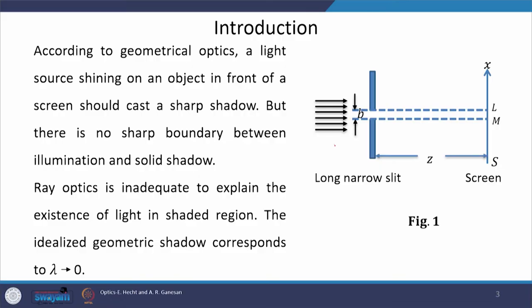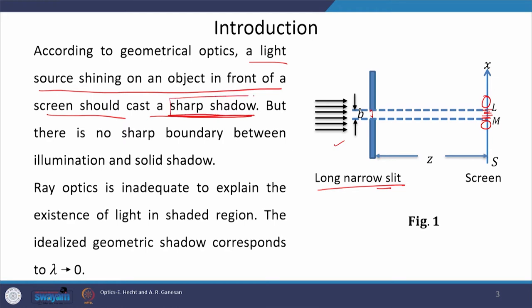When we launch a parallel beam of light — in this particular case let us talk about ray only — when we launch a parallel beam of ray on a very narrow long slit, what do we expect? We expect that since light propagates in a rectilinear path, we expect a very bright image of this slit and no light on the other side. This is the conception of geometrical optics, which says that a light source shining on an object in front of a screen should cast a sharp shadow. From a geometrical optics perspective we should not see any light in the part not falling in the straight line path of the light. But there is no sharp boundary between illumination and solid shadow, and this we know.